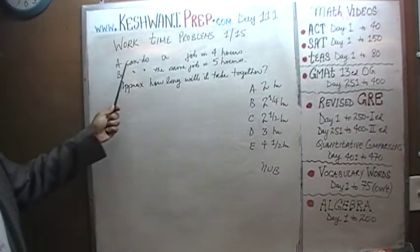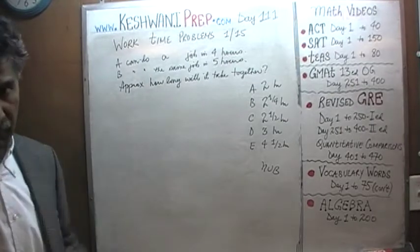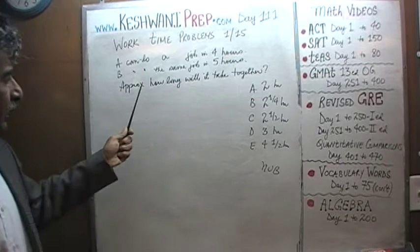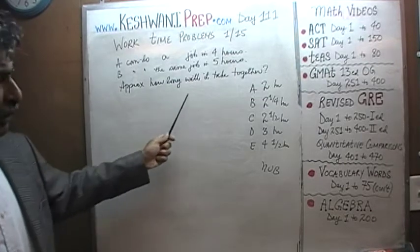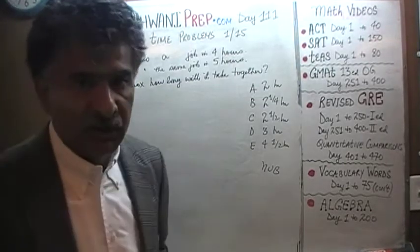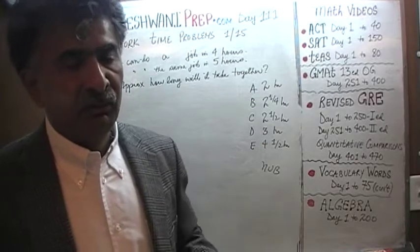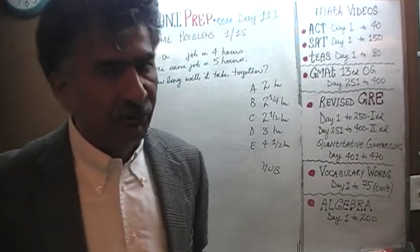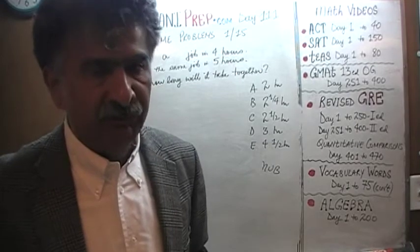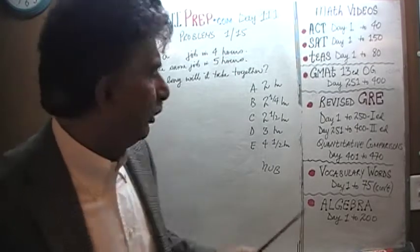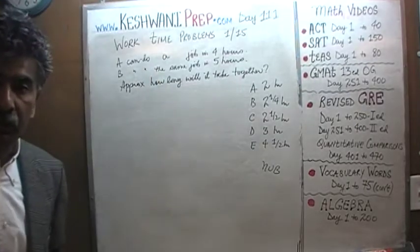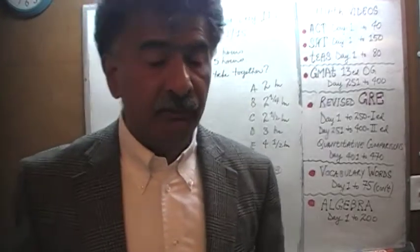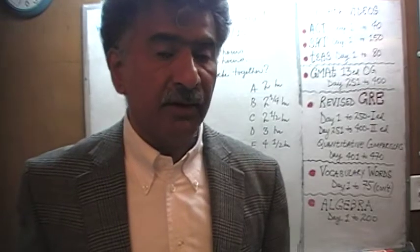Here's what it says. We are told that A can do a job in four hours. We are further told that B can do the same job in five hours. In the exam, it will say approximately how long will it take for them working together at their respective pace to finish the job. I'm leaving all of that out — it's understood that they're working at their respective paces. The question is how long will it take if they were to work together to finish the job. There are two ways we can go about it in the exam.